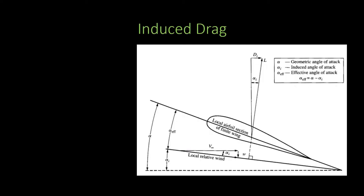Let me just summarize what induced drag is. Induced drag occurs because as the airplane flies there is a pressure difference on the upper and lower surface of the wing. At the upper surface we have lower pressure; at the lower surface we have higher pressure. Due to this pressure difference, air at the lower surface tries to move up, and near the wing tip vortices are formed. Due to the formation of these vortices, there is some downwash induced.